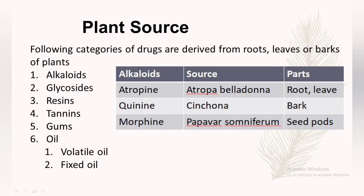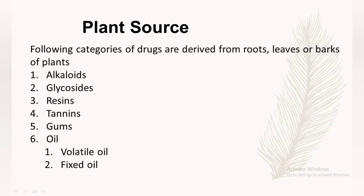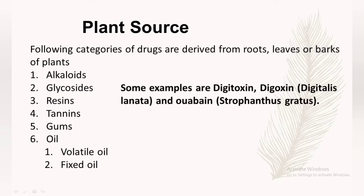Some examples of alkaloids are atropine, which is obtained from Atropa belladonna from the roots or leaves; quinine, which is obtained from the bark of the cinchona plant; and morphine, which is a potent opioid analgesic obtained from the seeds of Papaver somniferum.